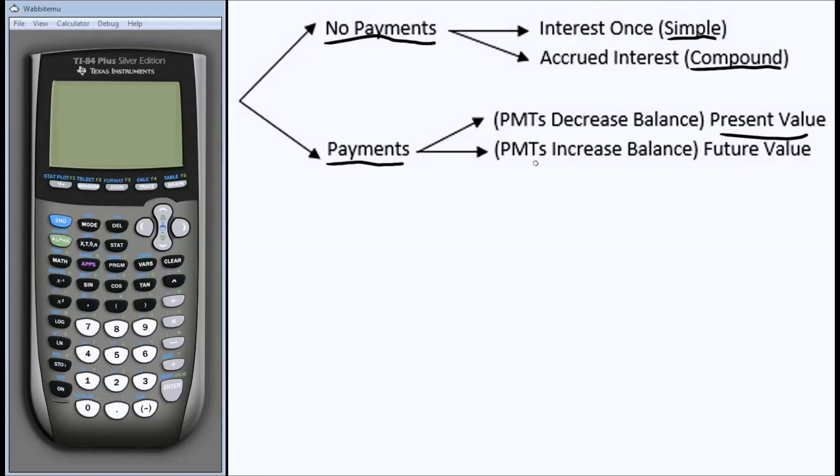If I'm dealing with a problem where I make a payment and that payment increases the balance, then I'm dealing with a future value type of problem. A future value problem example might be one where we're saving for retirement or for a down payment on a car, and every time I make a deposit into my account, that increases the balance of that account.